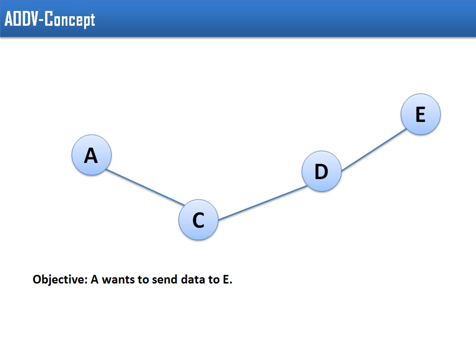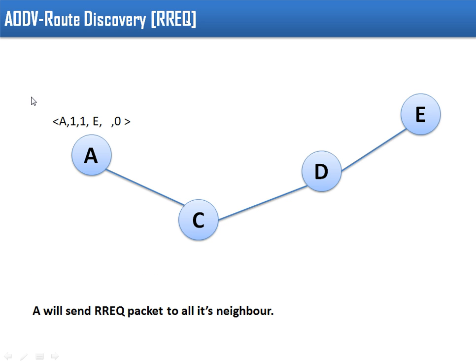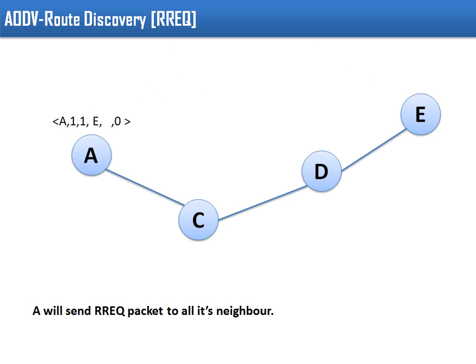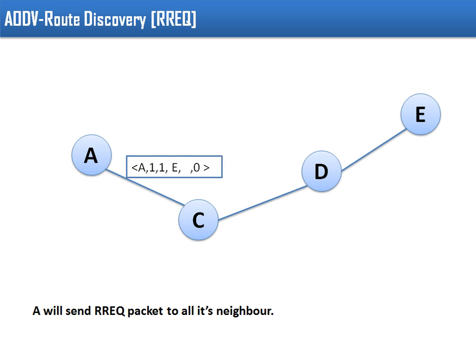Continuing our example: A wants to send data to E, so A starts the route discovery process and transmits a route request packet. The packet contains: source address (A), source sequence number, destination address (E), destination sequence number, hop count (initially 0, since distance from A to A is 0), and broadcast ID. A will broadcast this packet, and since A has only one neighbor, this packet is sent to C.